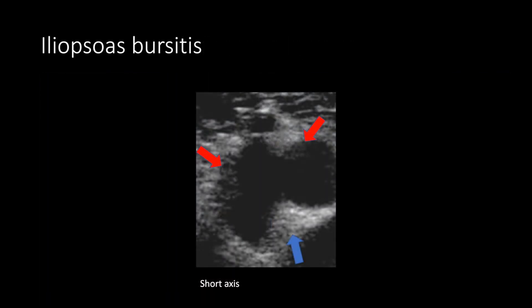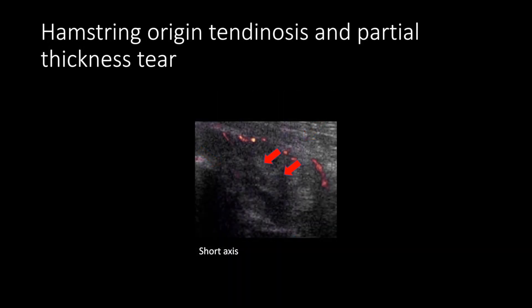This is an example of iliopsoas bursitis. The red arrows show fluid within the iliopsoas bursa while the blue arrow shows the iliopsoas tendon. This is an example of tendinosis and partial thickness tear at the hamstring origin. You can see thickening of the tendon and a discrete anechoic focus shown by the red arrows.